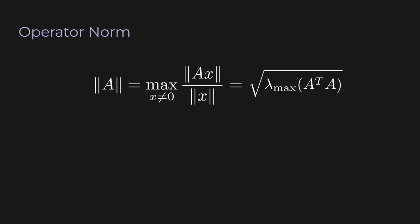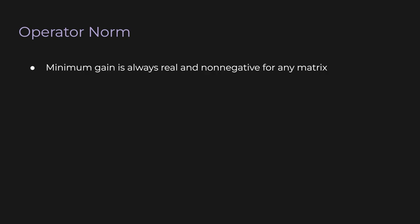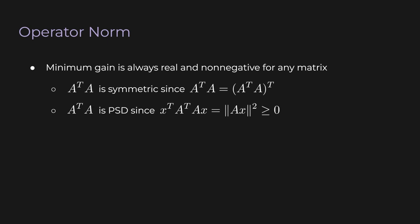Using the same logic, the minimum gain is the square root of the smallest eigenvalue of A transpose A. This square root is always defined and real, because A transpose A is symmetric (verifiable by taking its transpose) and PSD — since x transpose A transpose Ax equals ‖Ax‖², which is always non-negative. So by the PSD definition, the smallest eigenvalue of A^T A is non-negative, meaning λ_max is also non-negative. Thus the operator norm and minimum gain are always non-negative.